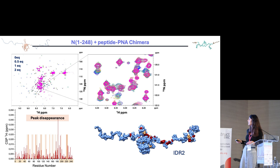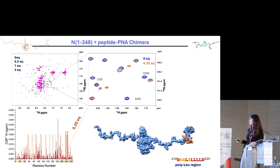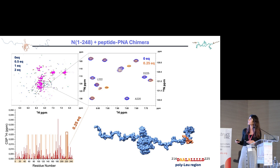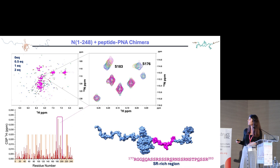IDR2 is also considered in the literature as the most involved in the interaction. In particular, two regions of these flexible linkers are notable: the poly-leucine regions, which with the addition of only 0.25 equivalents of ligand show complete disappearance of these residues, and also the SR-rich regions.